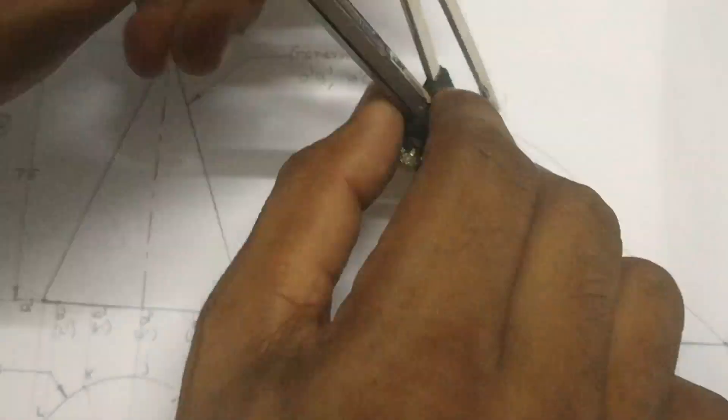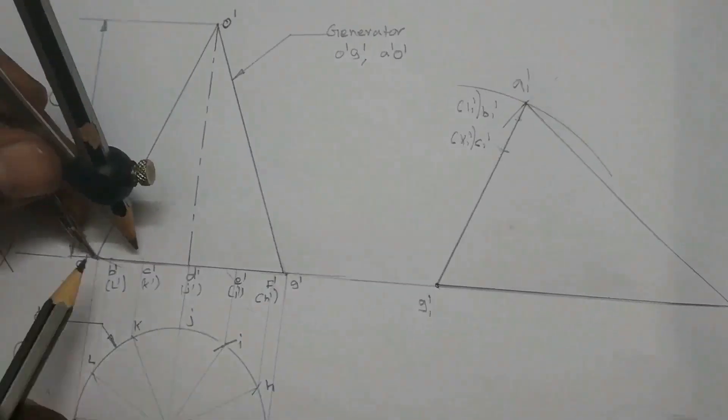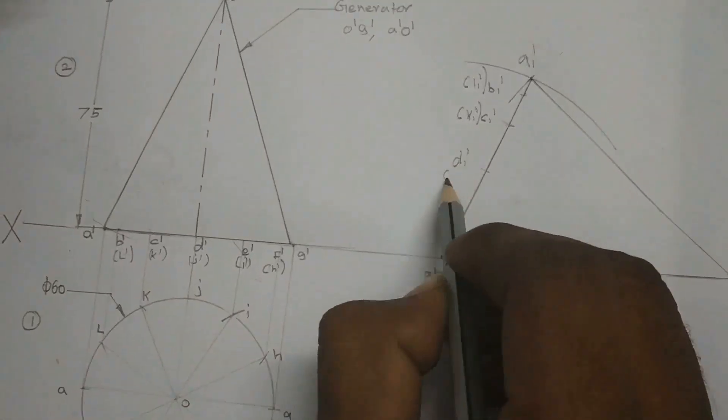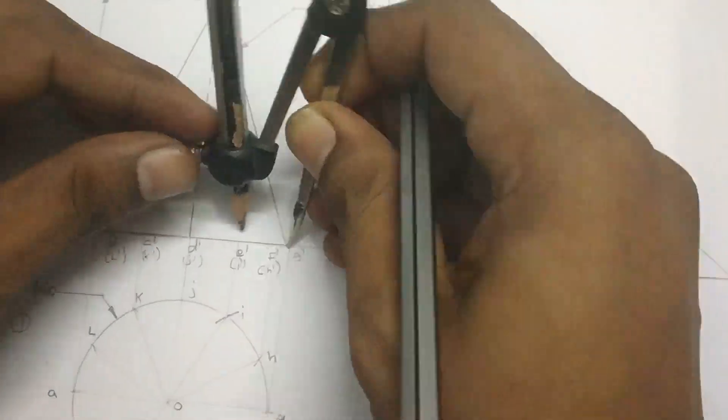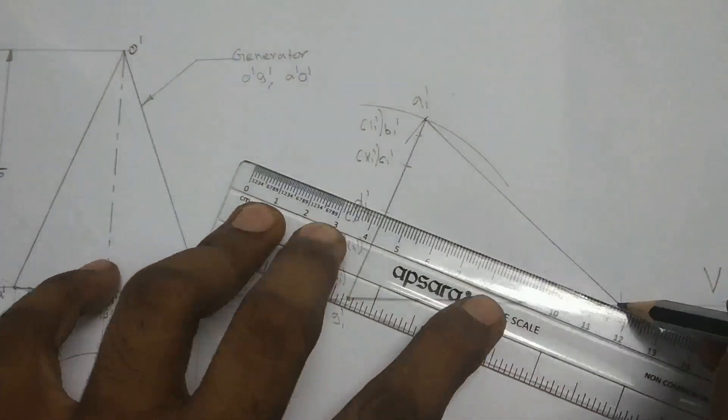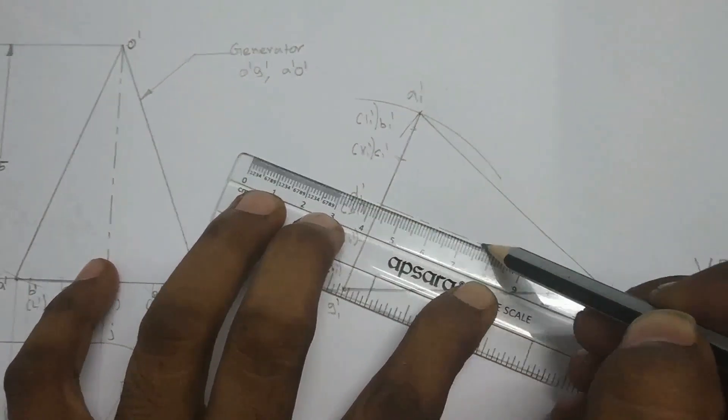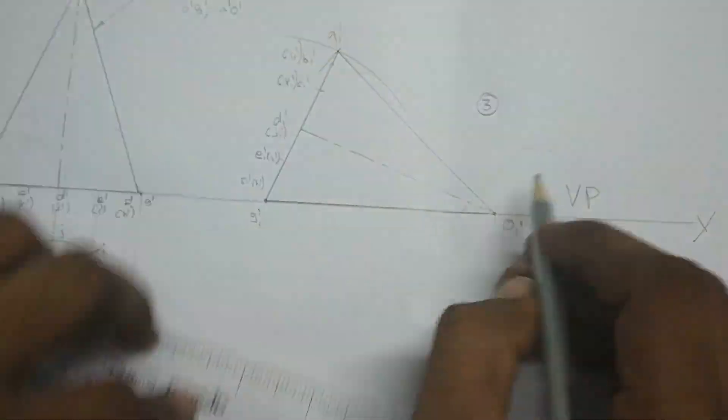Transfer all the points to step 3. We need to write the conditions nearer to the step 3 here the generator lying on HP is our condition.